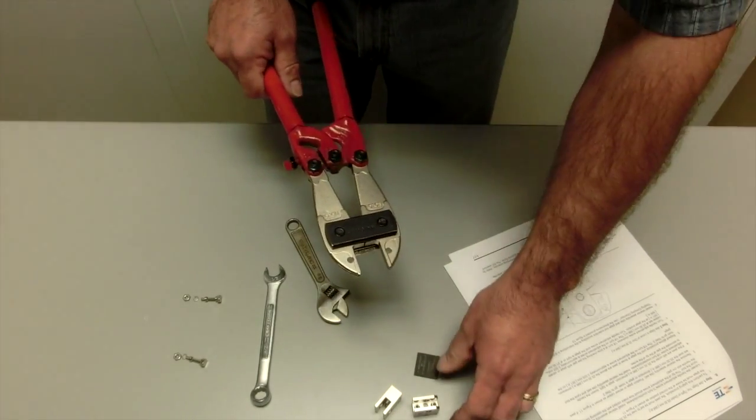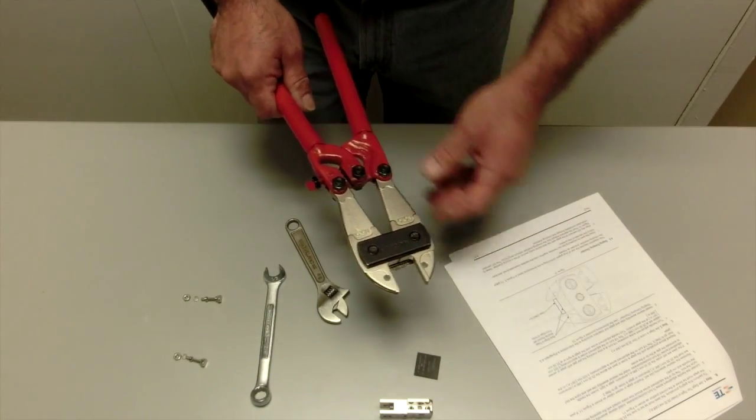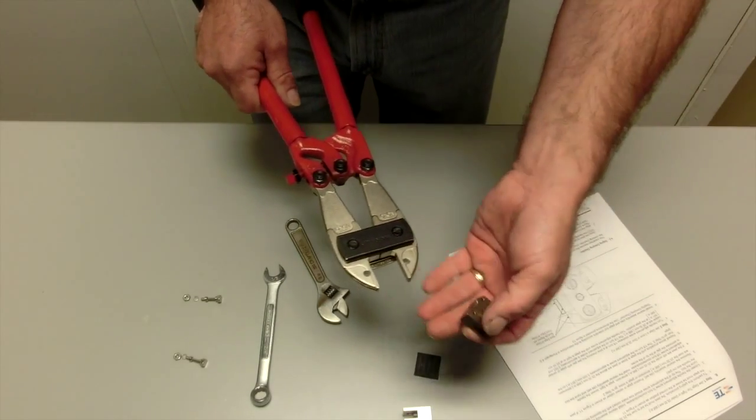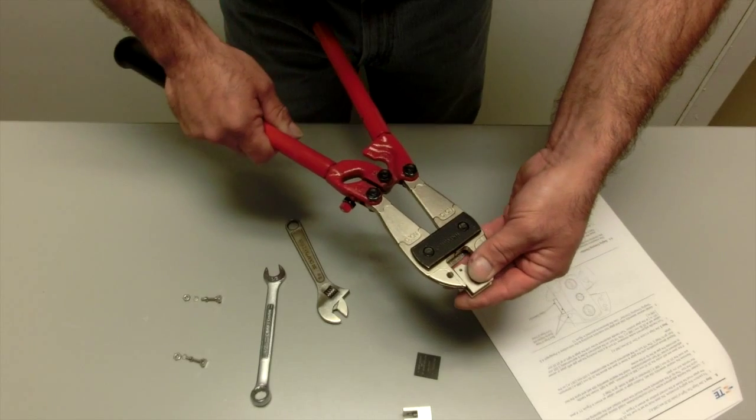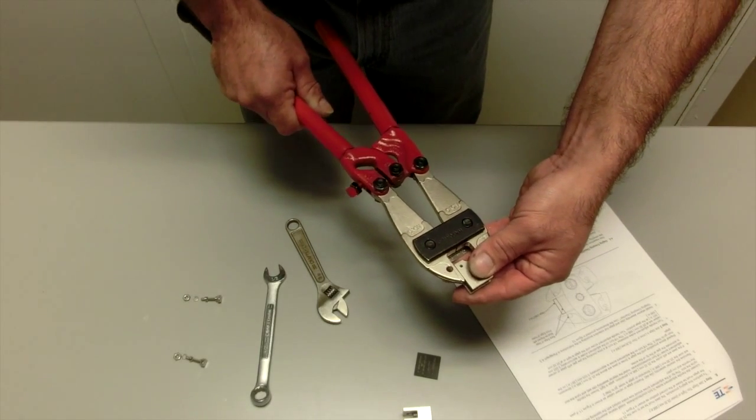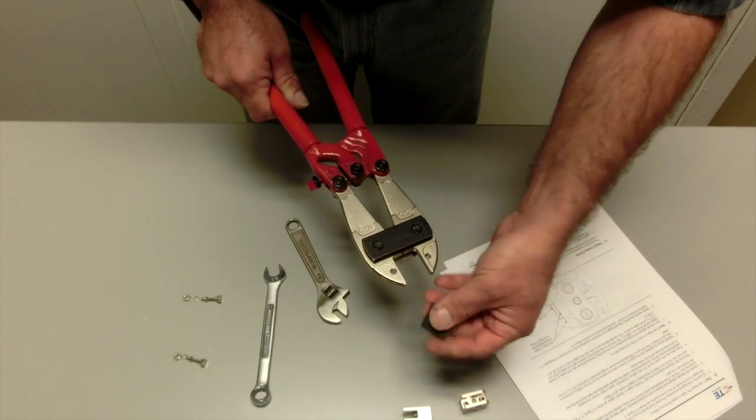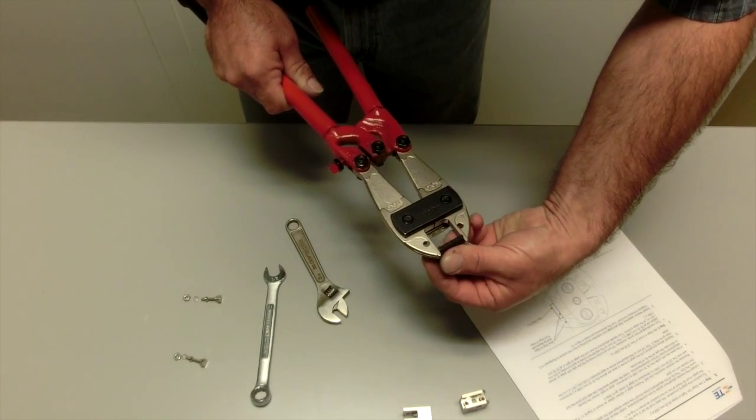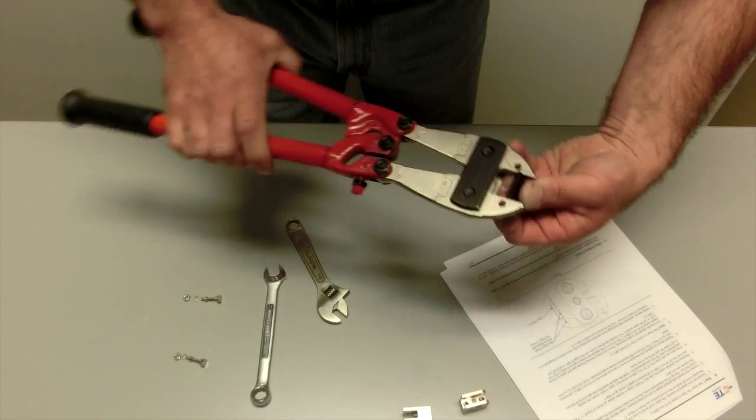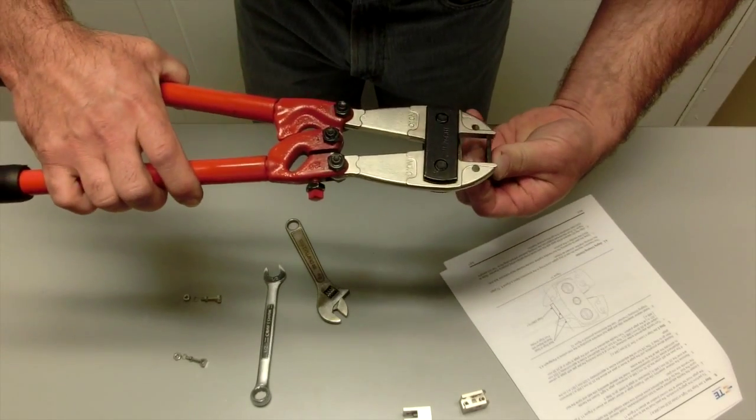I will redo. Now what you want to do is you want to use your die set once again to put pressure on those jaws to move the components out to their outmost position.